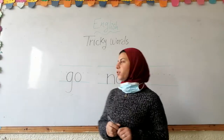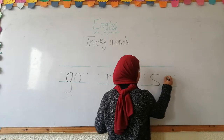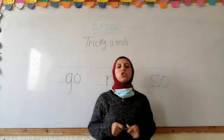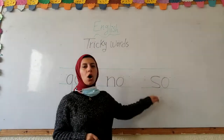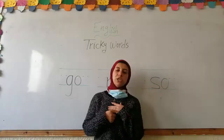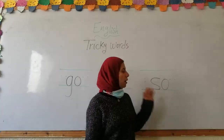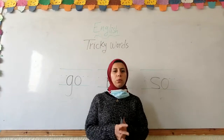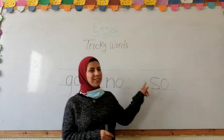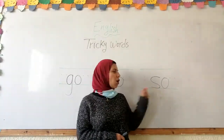The third tricky word is S, O — so. I am a teacher, so I work in a school. I am a teacher, so I work in a school. So — the third tricky word is so.